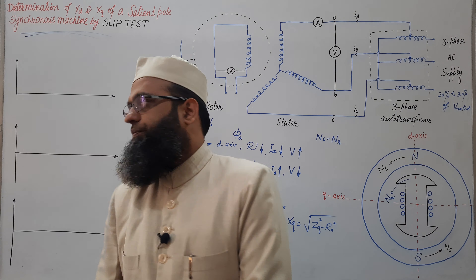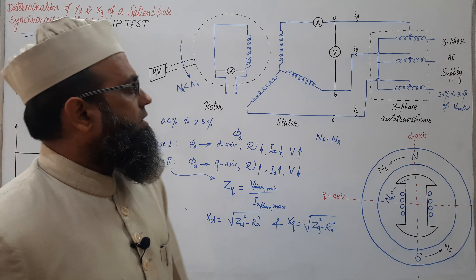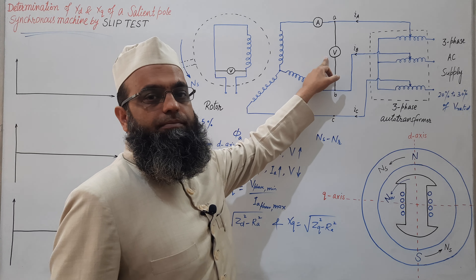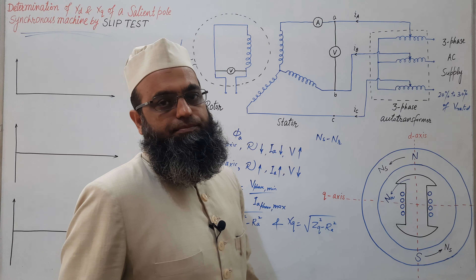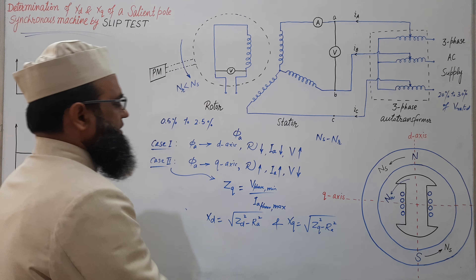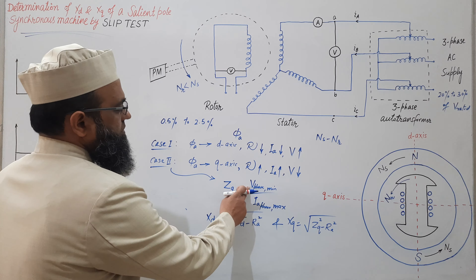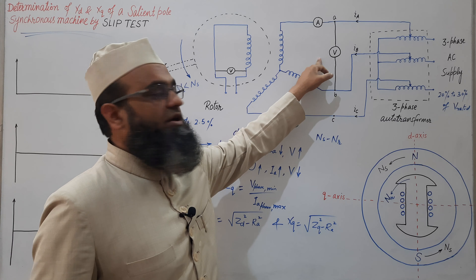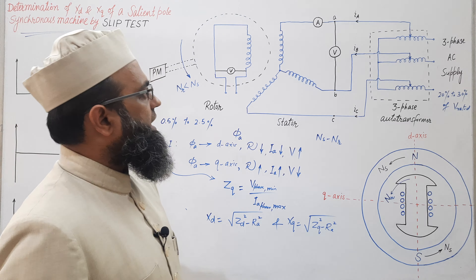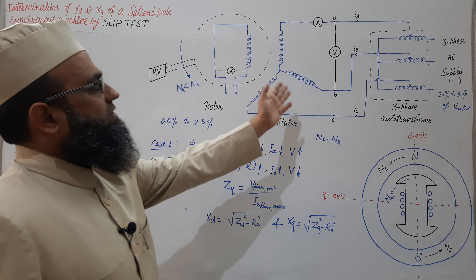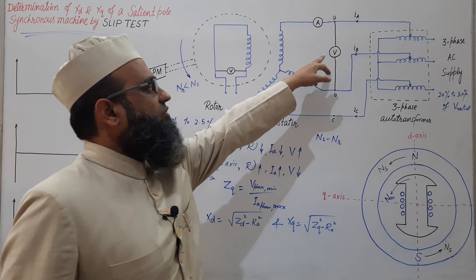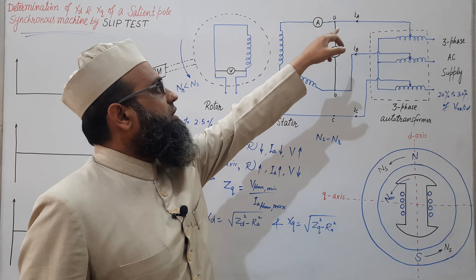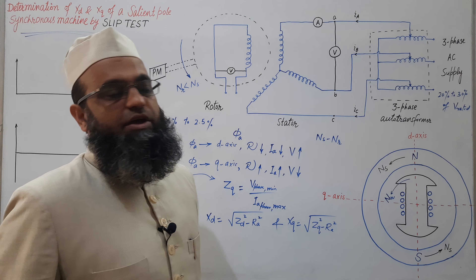It may be noted that the readings observed by this voltmeter is line voltage. Here we need to substitute phase voltage, hence we need to divide this reading by root 3 for this star connection. As for this connection, phase voltage is equal to line voltage by root 3, whereas phase current and line currents are equal.